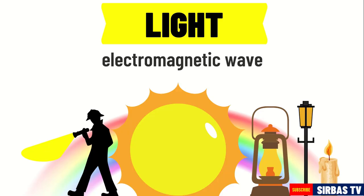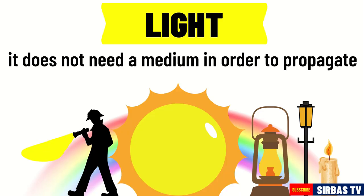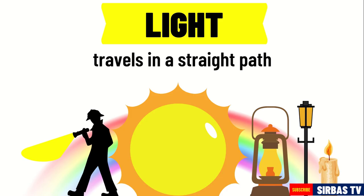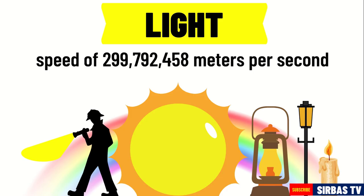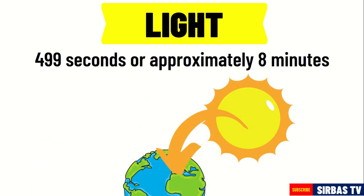Light is an electromagnetic wave. This means that it does not need a medium in order to propagate. Light travels in a straight path. In vacuum, light has a speed of 299,792,458 meters per second.